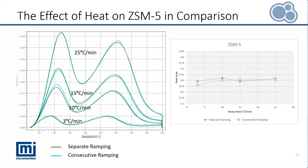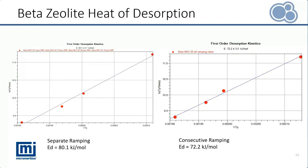Here are the first order kinetics plots of the weak acid sites in beta zeolite from the separate ramping experiment on the left and the consecutive ramping experiment on the right. We see different heat of desorption values resulting from the different experimental approaches. So if we are aware of a material susceptible to heat, then separate ramping should be employed by preparing a fresh sample for each TPD analysis to accurately characterize acidity and the binding strength of the material. The AutoChem 3 allows heat of desorption calculation from several different sample files to successfully calculate a more accurate heat of desorption of an acid site.